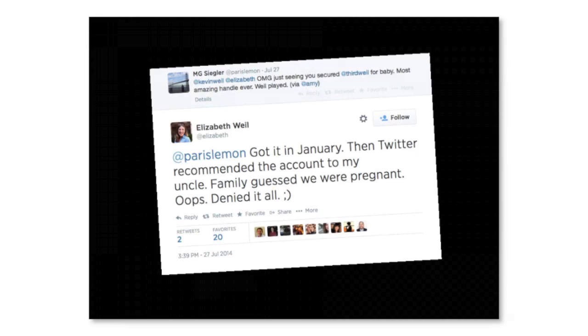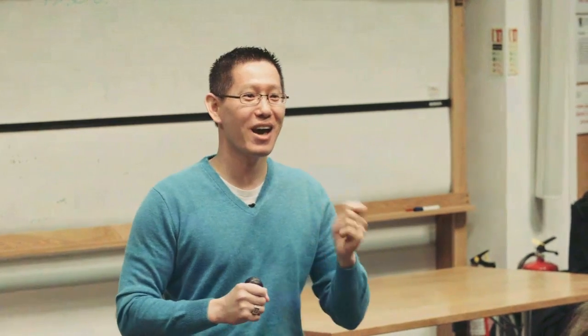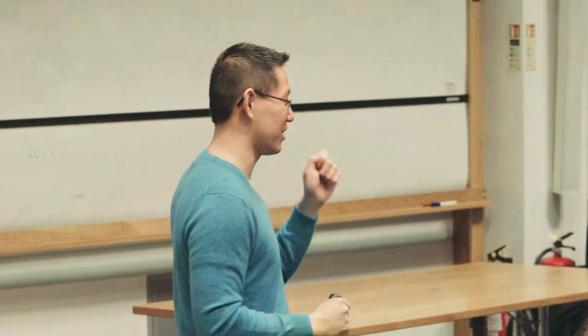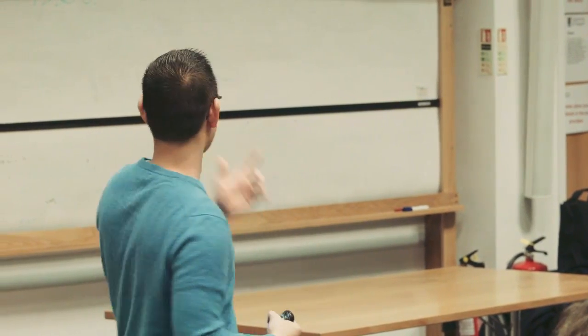Here's an anecdote I like to share. A colleague of mine, Kevin and Elizabeth Wheel, got a Twitter handle for their baby that wasn't born yet, called 'Third Wheel' — get it? They weren't ready to share the news that they were pregnant, but they created this account. What happened was the system started recommending this account to all their parents, family, and friends. They reverse engineered it and figured out they were pregnant. The system actually outed their news before they were ready to tell the world.